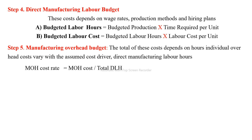Manufacturing overhead includes all indirect material and indirect labor — the combination of all indirect costs that cannot be easily allocated to a cost object. A cost driver is used, typically direct labor hours. The overhead rate equals total manufacturing overhead cost divided by total budgeted direct labor hours. This indirect cost per unit is then assigned to production.